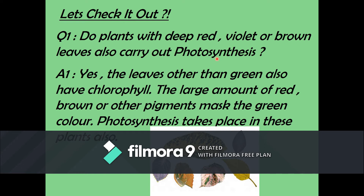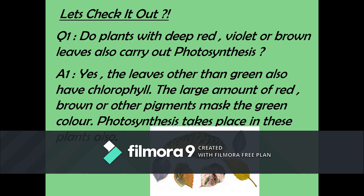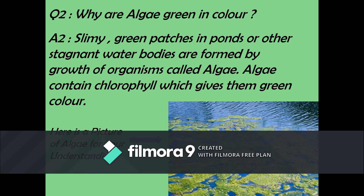Do plants with deep red, violet, or brown leaves also carry out photosynthesis? Yes. The colored leaves — other than green — also have chlorophyll. The large amount of red, brown, or other pigment masks the green color. Photosynthesis takes place in these plants as well. So it is not only in green plants; it is also carried out in leaves which are deep red, violet, or brown.